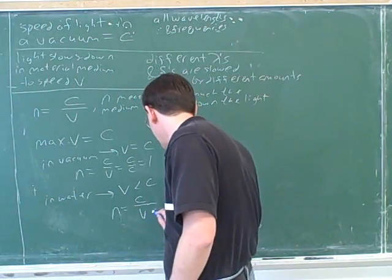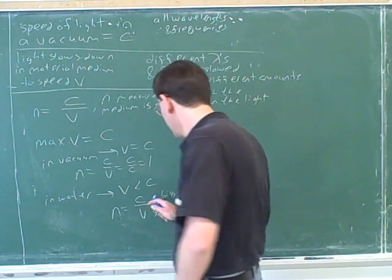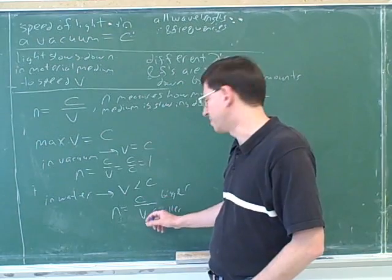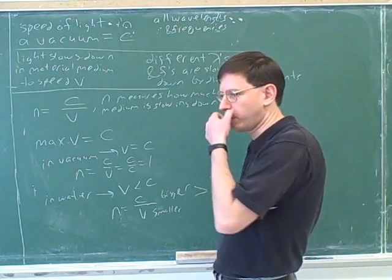Okay, so what you wrote down was that C is the bigger number here and V is the smaller number. Well, when the bigger number is on top, that means the fraction is bigger than 1. Right.